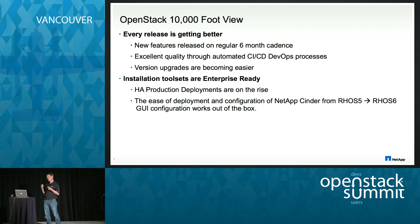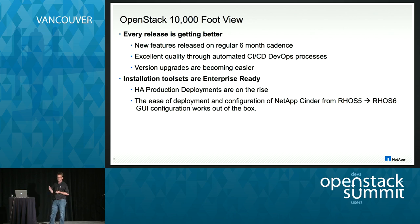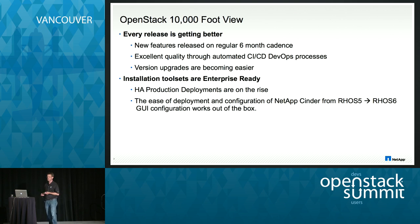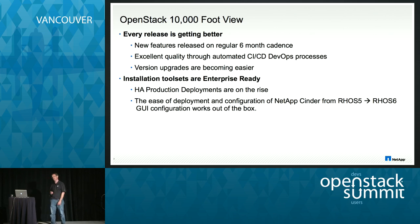When we submit code, before it even goes upstream, we test it internally against all of our protocol modes. So even if we're only changing something related to NFS, it gets tested against Fibre Channel and iSCSI and the other modes. HA deployments are on the rise — a lot of early testing is done without HA, but the tool sets with Puppet and the Foreman installer really make HA quite easy to achieve.